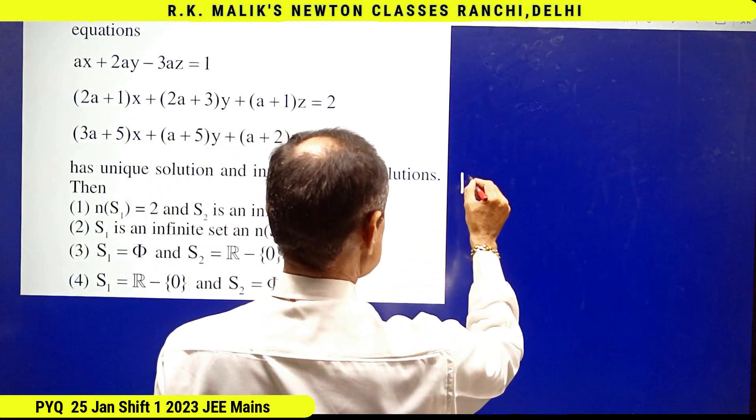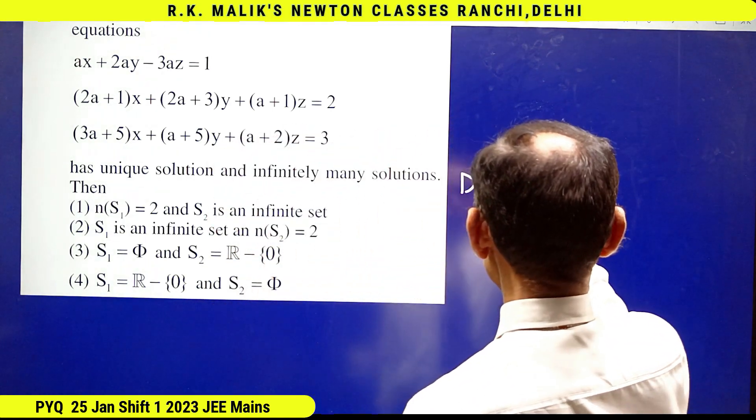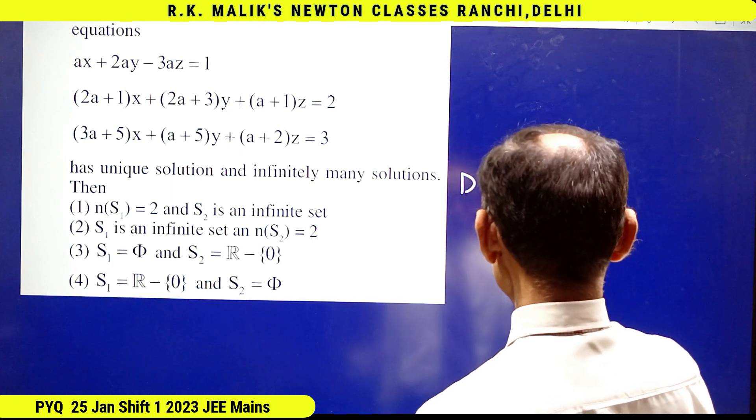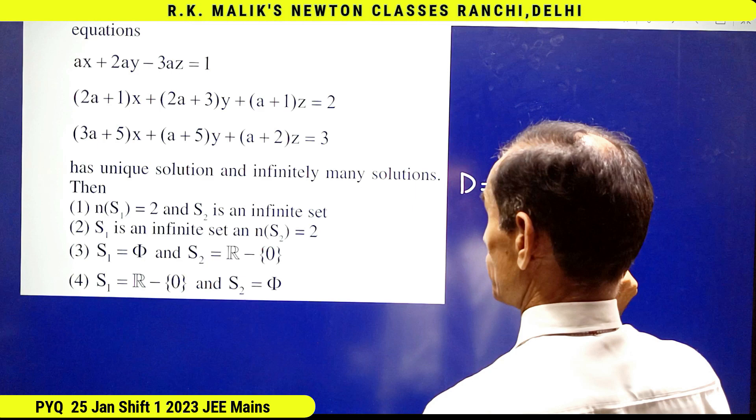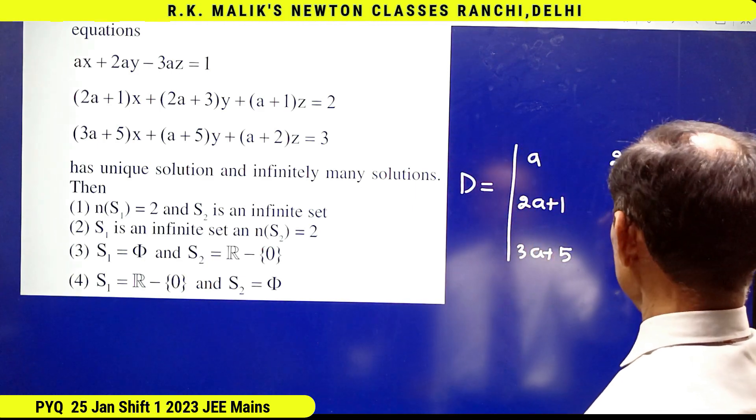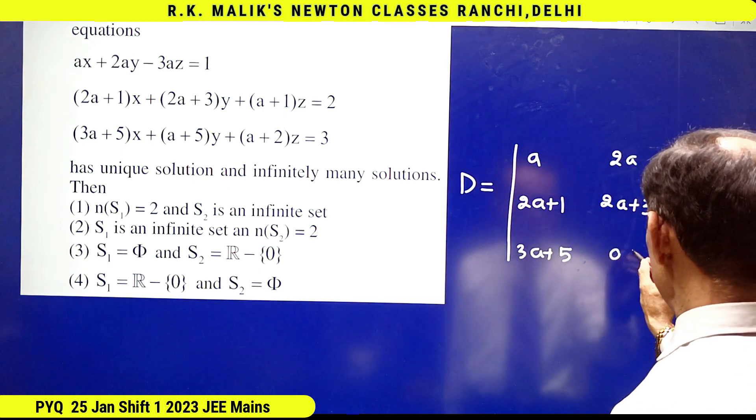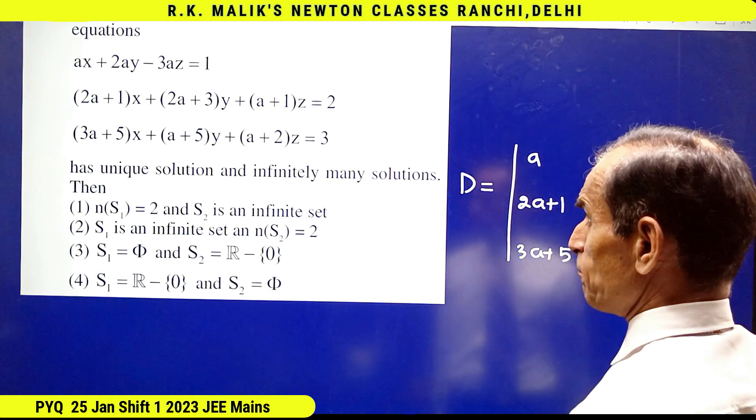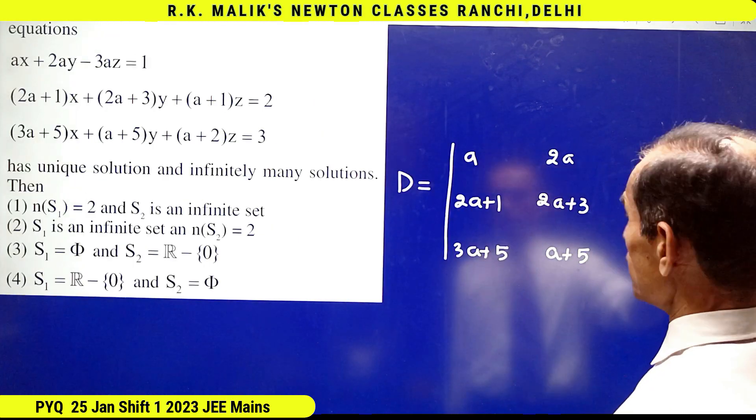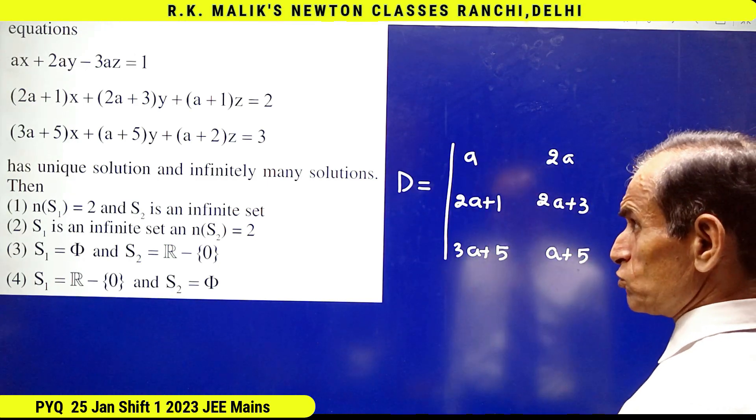Here it is clear that D is equal to: a, 2a+1, 3a+5; 2a, 2a+3, a+5; and a+5, minus 3a, a+1, a+2.